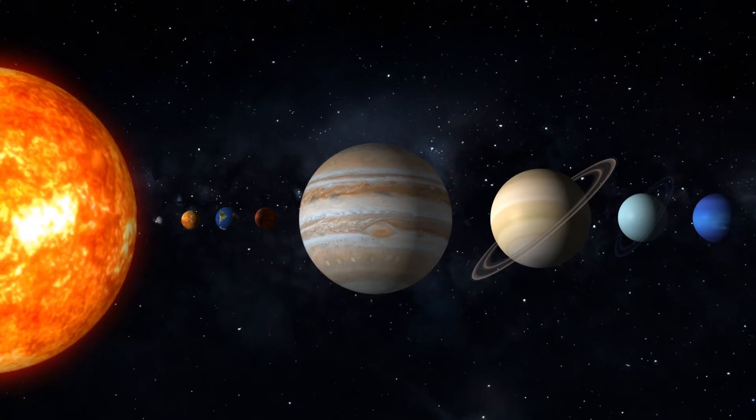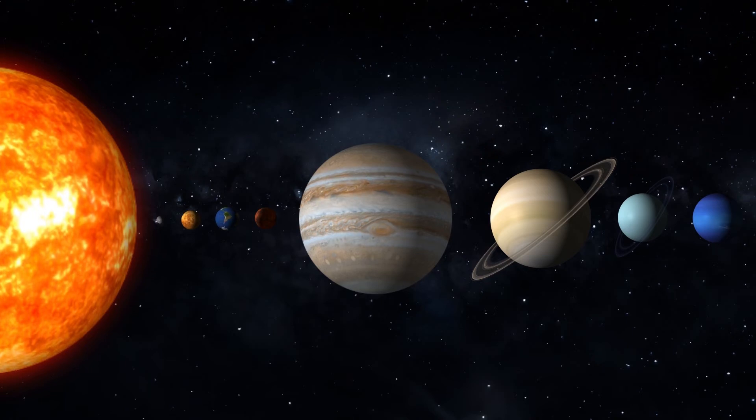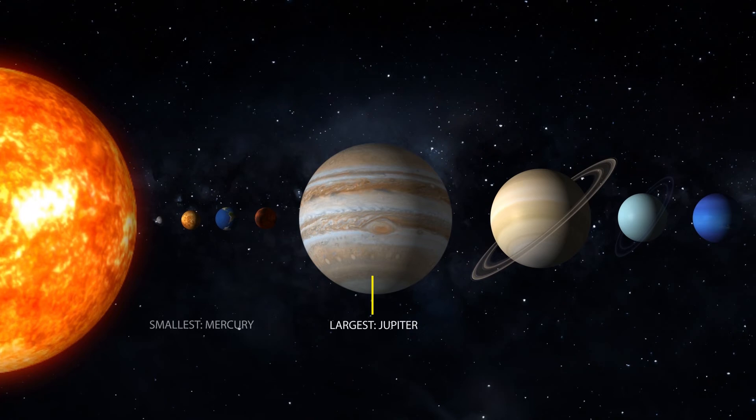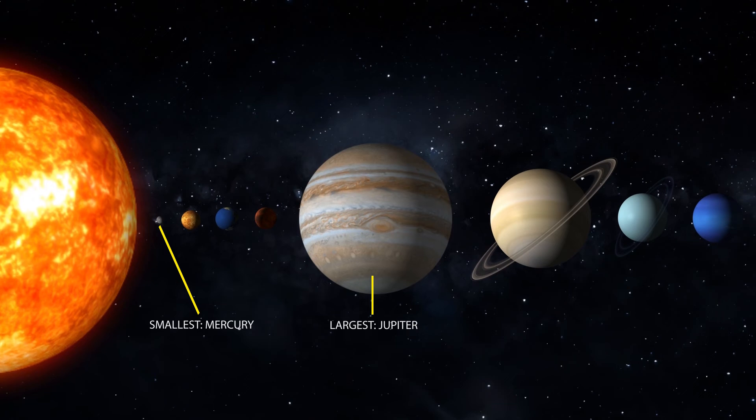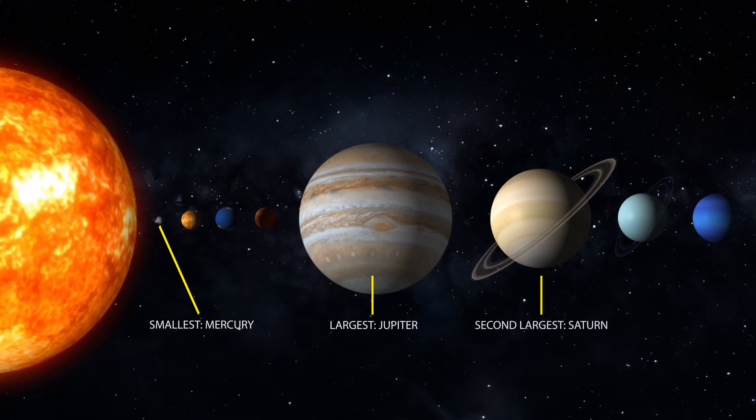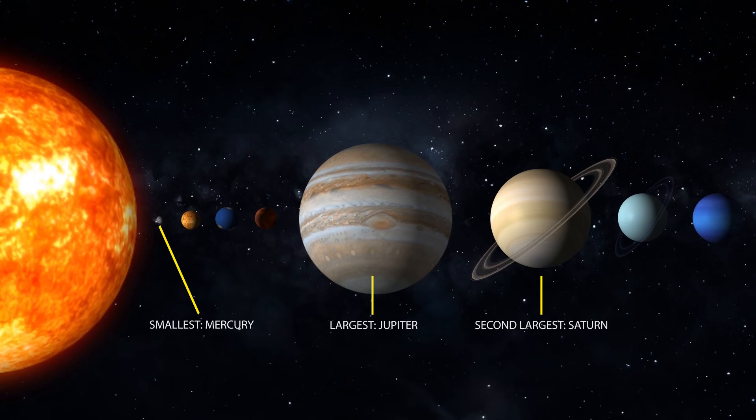This is how they will look if they were placed in a horizontal line. The largest planet in the solar system, Jupiter, is more than twice as big as all the other planets combined. Saturn is the second largest planet, over nine times bigger in diameter than the Earth. The smallest planet is mercury. Now let us place the planets according to the size for comparison.